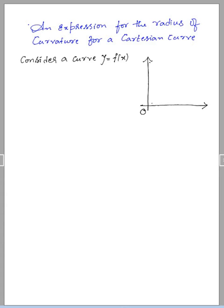This will be the initial point. I will name this initial point of the curve as A, and I will consider a point called P. As it is a Cartesian curve, this point P is defined by P of x comma y. We draw a tangent at this point which touches the initial line and makes an angle psi. The arc AP has length defined by s.